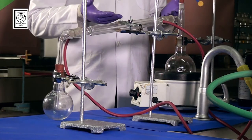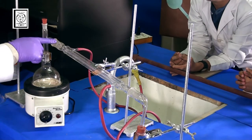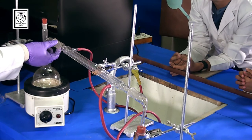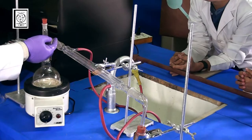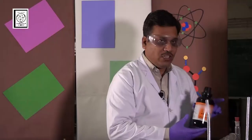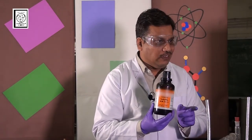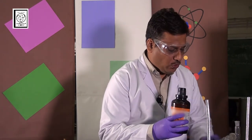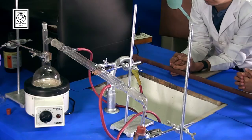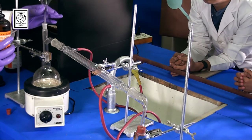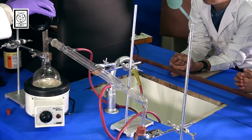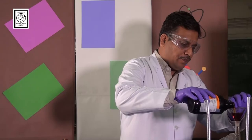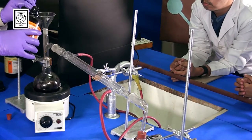But before starting, one precautionary note for you: carefully adjust the angle of adapter with condenser so that liquids should not come out here. Okay. Now I am adding this impure sample of aniline to this distillation flask. I can use the funnel for the purpose. Here I am adding the aniline impure sample.